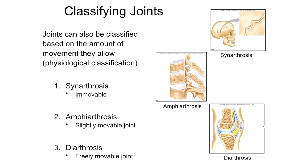The last type of joint classified by physiology is a diarthrosis — the freely movable joints. Most joints in our bodies are diarthroses. We'll focus most of our attention here because they make up most of the body's joints, are the joints most commonly injured, and are the ones most commonly treated in a medical setting. You don't see people coming in with a sprained skull suture because those immovable joints are far less likely to be injured.